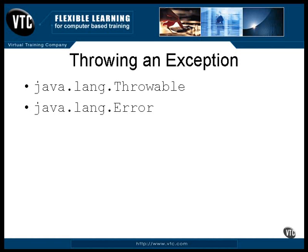An object of the Error class, or one of its subclasses, is thrown for a serious problem. This type of exception is usually thrown by the system to indicate the death of a thread or something equally as fatal. These are also known as unchecked exceptions because the compiler doesn't check whether they could be thrown, and it doesn't require you to specify in your code that they could be thrown. Under normal circumstances, your program should not catch unchecked exceptions. They should be allowed to continue up through the method calling chain until they reach the virtual machine, at which point an error message is displayed and the program halts. In special circumstances, such as embedded systems that must keep running, you may want to catch these, but be sure you know what you're doing before you try to continue processing.